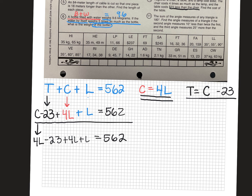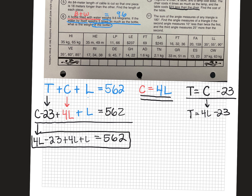So that was a bit involved. Now you've got this equation: 4L minus 23 plus 4L plus 1L equals 562. You can add the L's together and move 23 to the other side. Once you figure out L, you can multiply by 4 to find C. And once you find C, you subtract 23 to find the table's cost. Good luck with that.